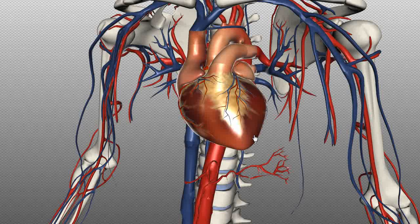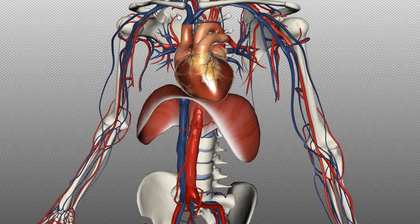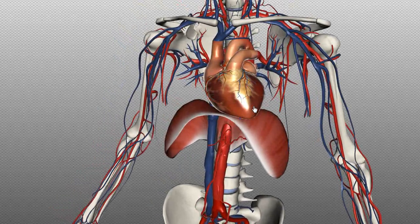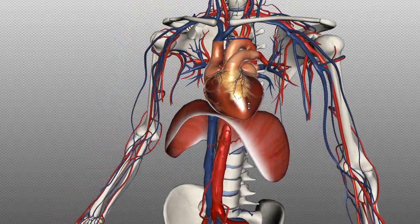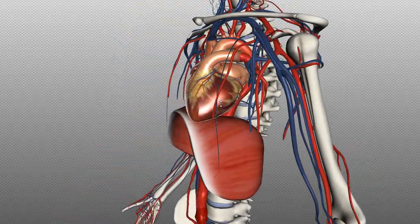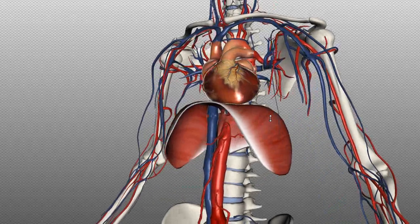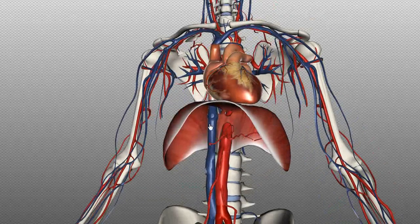I've just added in the diaphragm which separates the thoracic and abdominal parts of the aorta. You can see it looping over the ascending, the arch, and the descending portion. The thoracic aorta is above the diaphragm and the abdominal aorta is below the diaphragm.